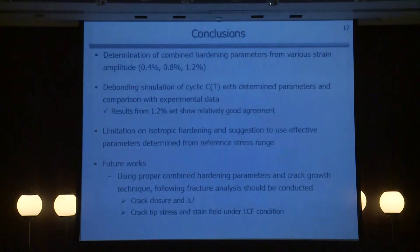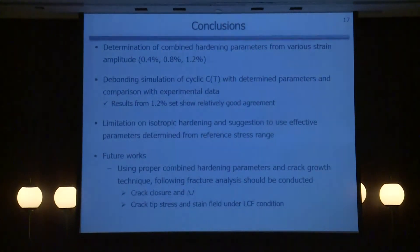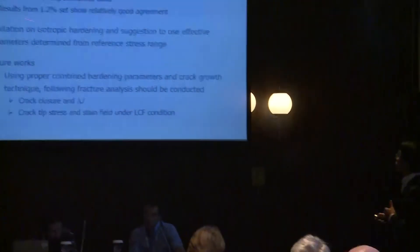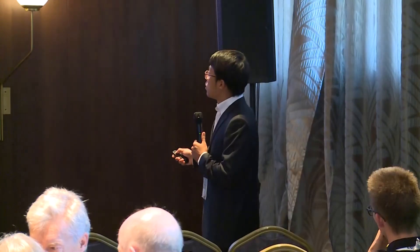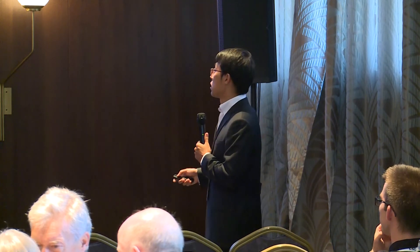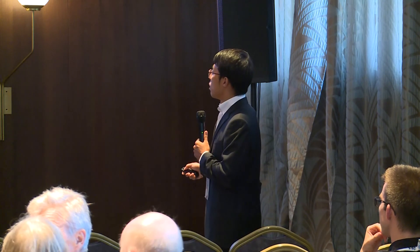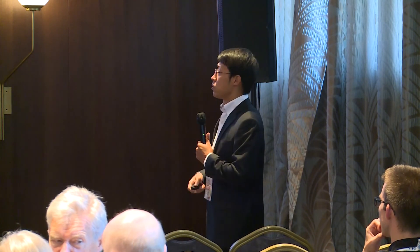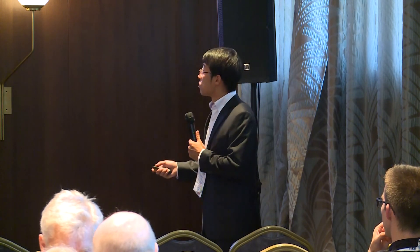In conclusion, we determined parameters for three different strain ranges and compared results using the debonding option. We proposed an effective isotropic hardening parameter and used it in the simulation. Future work will study crack closure, delta J, and the corrective stress field. That is all of my presentation. Thank you for listening.